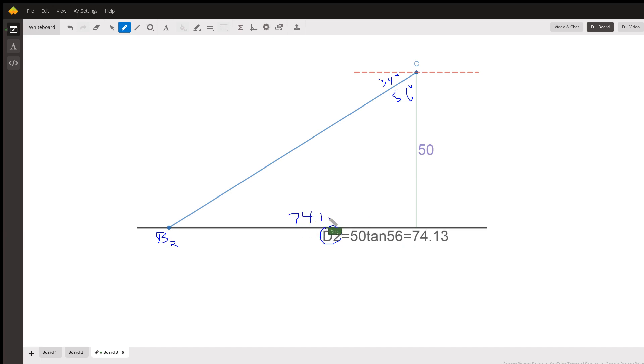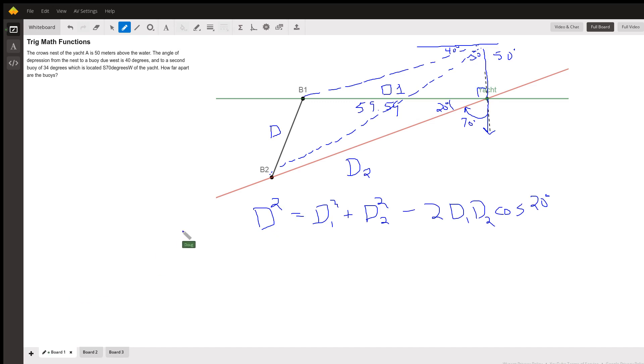So if we go back to board one, this distance right here is about 74.13. Substitute these numbers into this formula and then take the square root to get what the distance between the two buoys is. There you go. I hope that gave you some ideas and if you have any questions, post a comment.